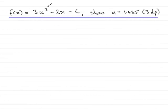Now in this part of the question, we have f(x) = 3x³ - 2x - 6, and we need to show that the root of this equation, where this equation equals 0, that root alpha, is 1.435 to 3 decimal places.